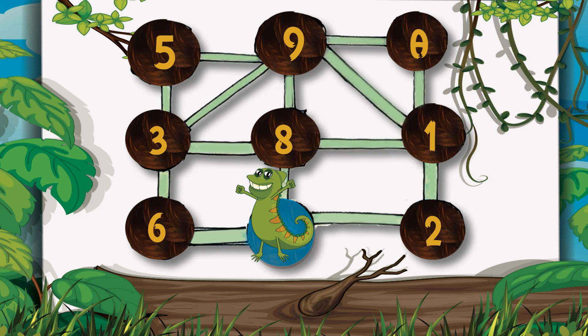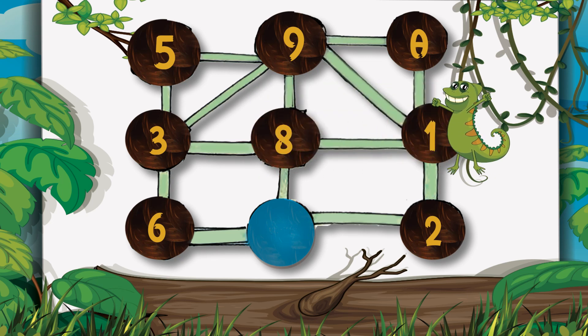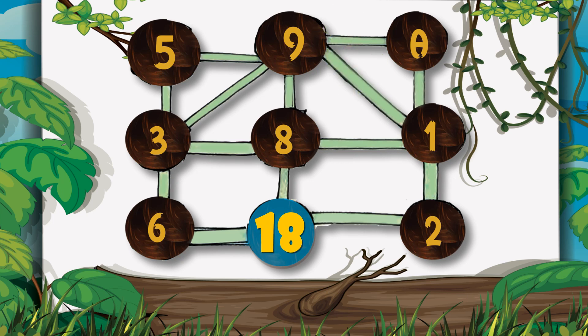8 plus 1 plus 9 will make 18. What path can the lizard take to eat 12 insects?